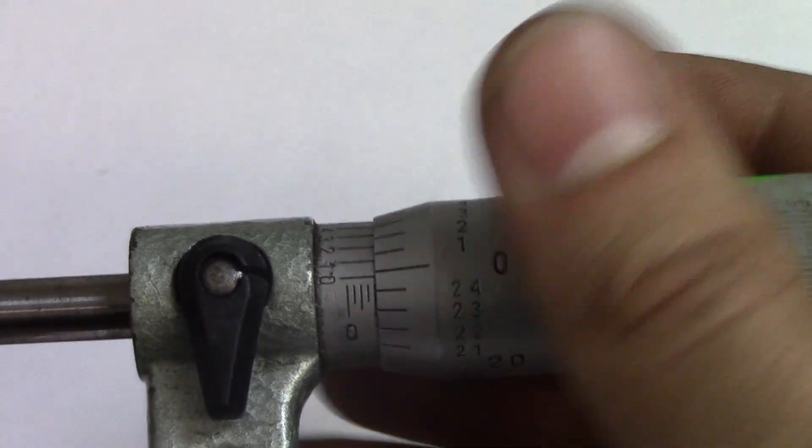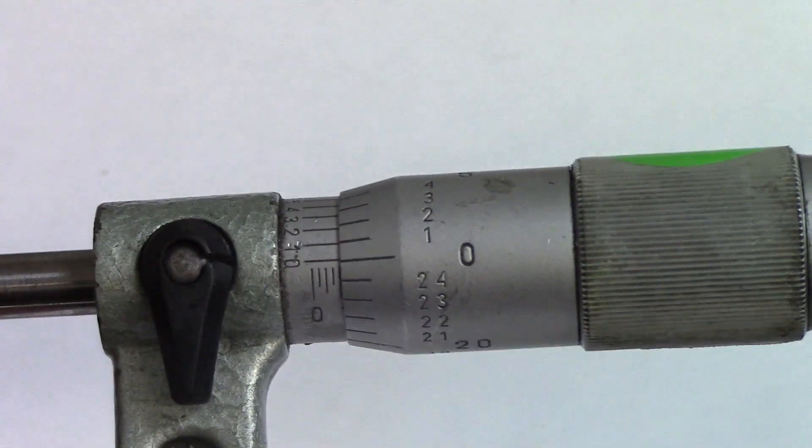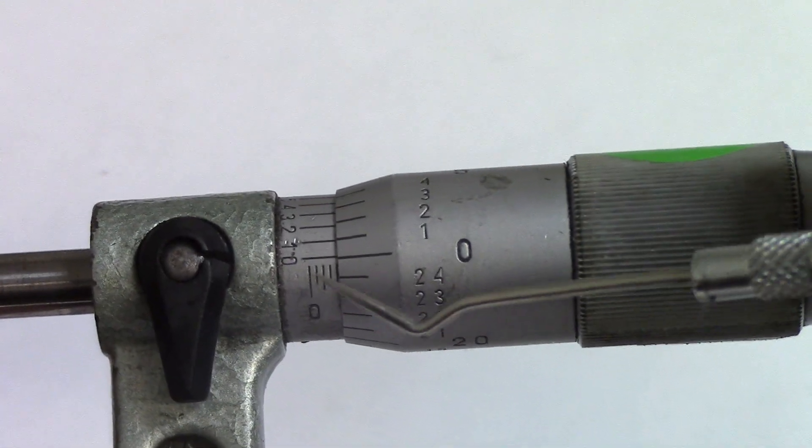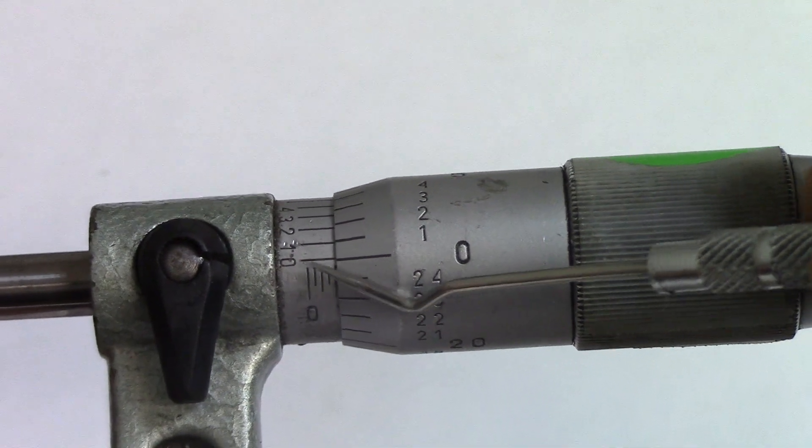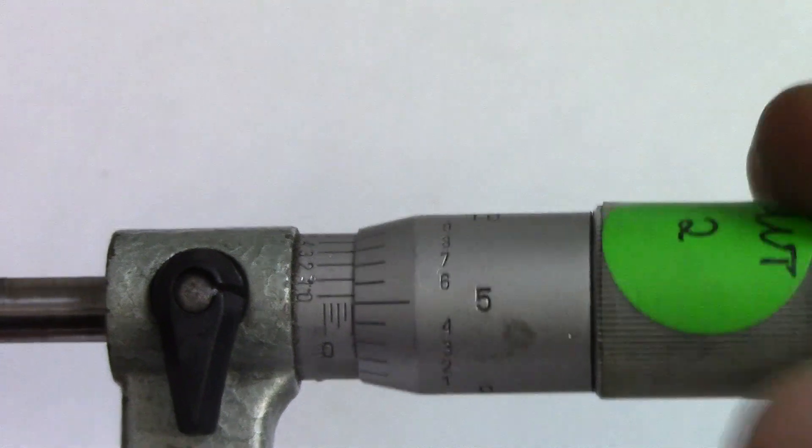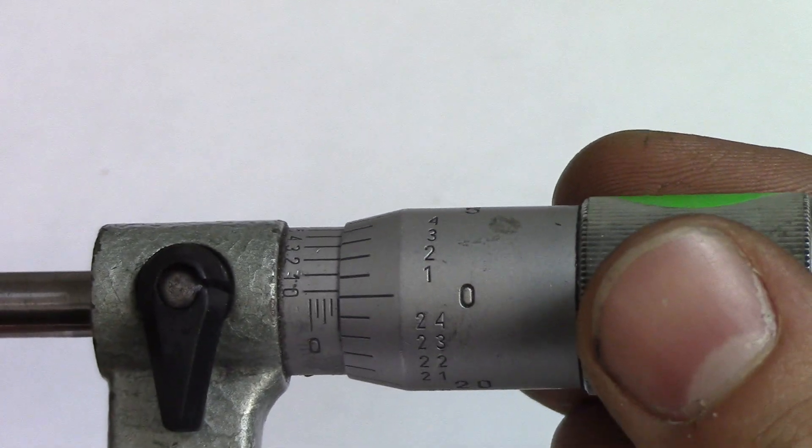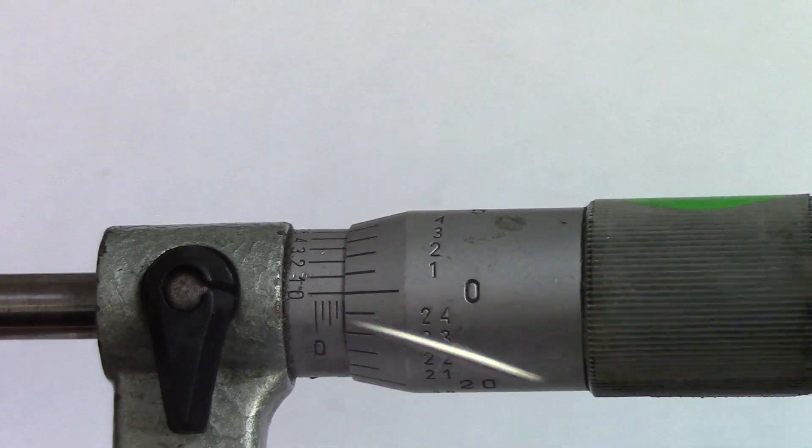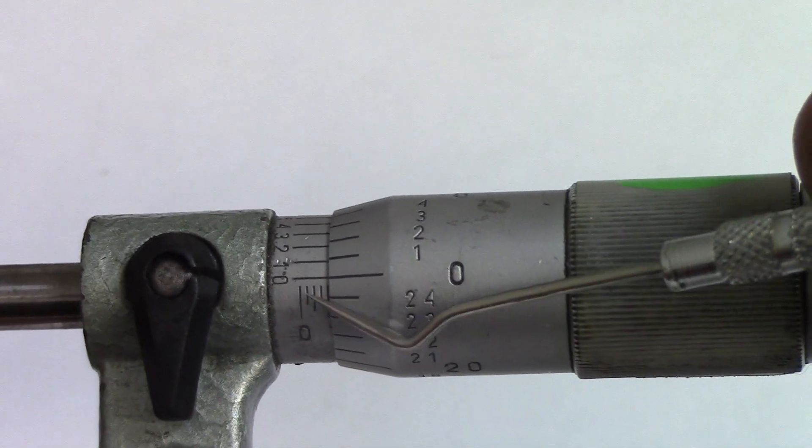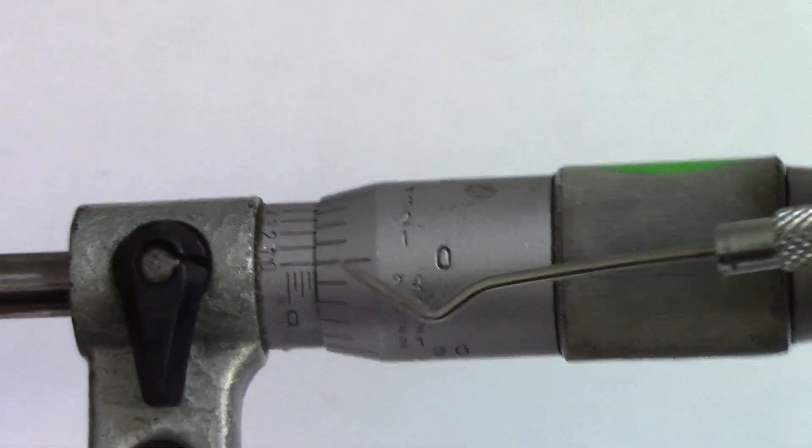The next thing you want to look at is where this zero is right here with your one thou increments. Let's open it up to 100 thou. That right there is 0.1, because you've got 1, 2, 3, 4, and 4 times 0.025 is 0.1. So now that is 100 thou.